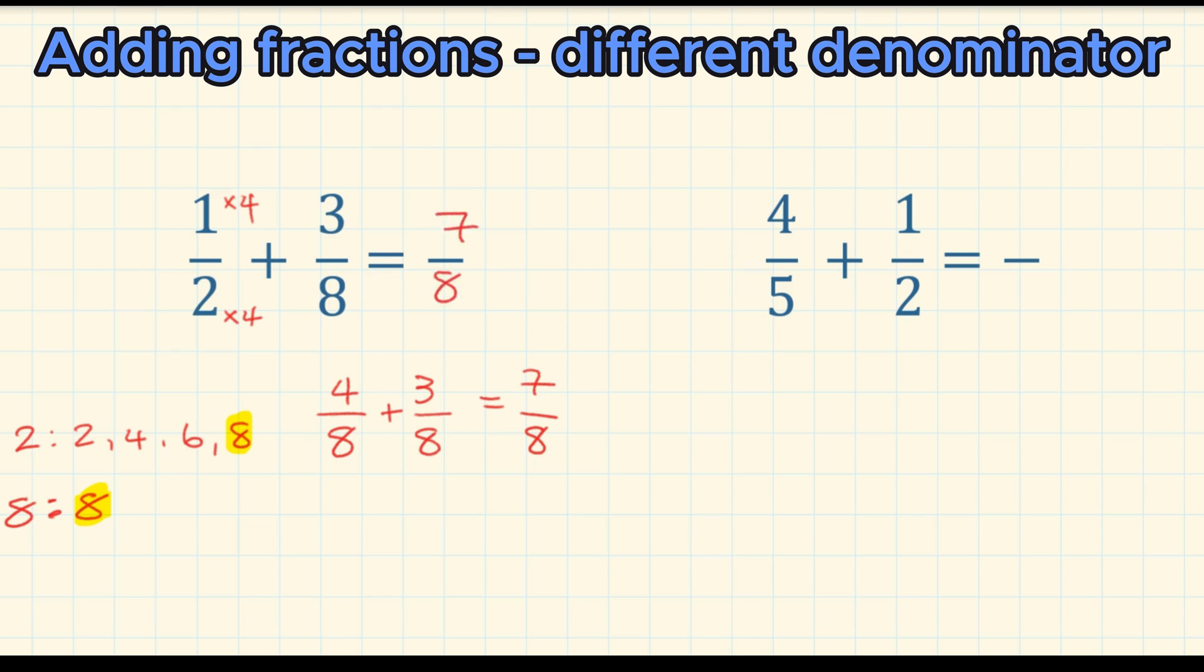Okay, let's look at four fifths plus a half. So we want to find the lowest common multiple for five and two.